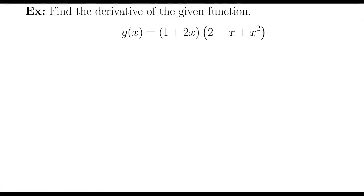Let's find the derivative of the function g of x equals 1 plus 2x times 2 minus x plus x squared. So we're going to have to multiply this out. We're going to have to distribute to figure out a better representation of this function, so that way we can apply the power rule.